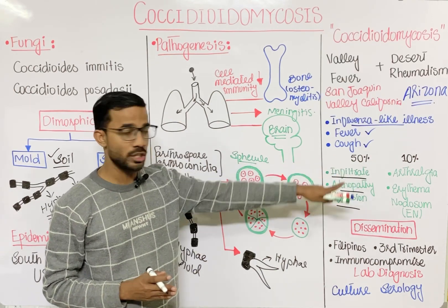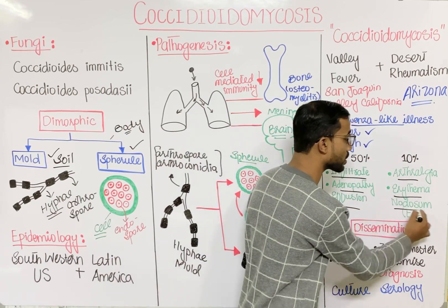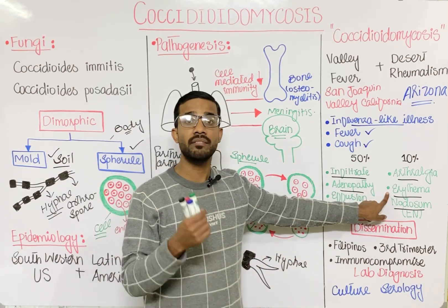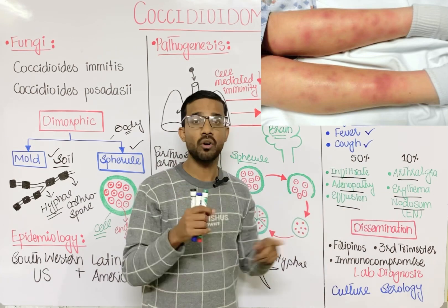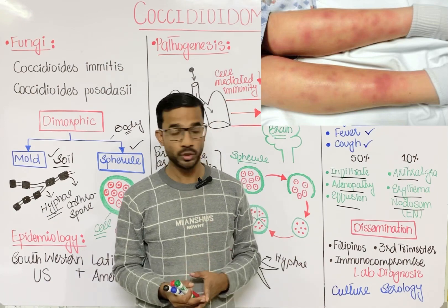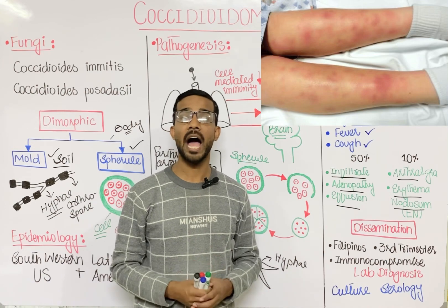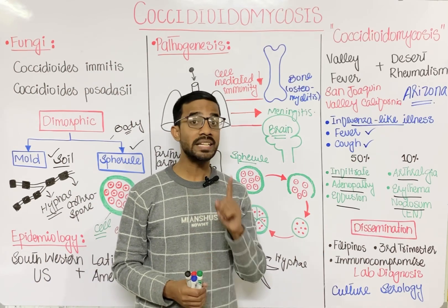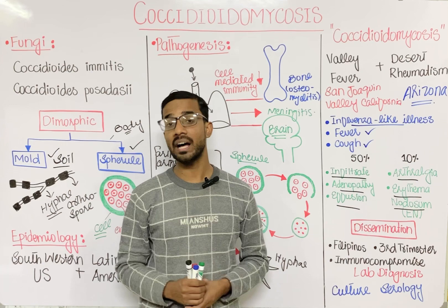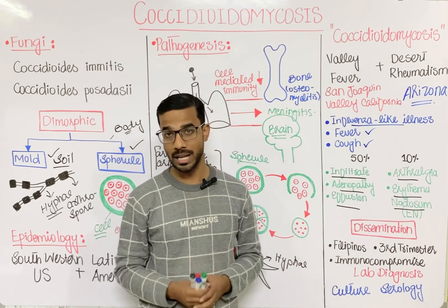In 10% of cases, you will see arthralgia, joint pain, and erythema nodosum. Erythema nodosum is red, tender nodules on the skin, specifically on the extensor sides of the tibia and ulna, and represents a delayed hypersensitivity reaction. However, erythema nodosum can also be present in other diseases like tuberculosis, leprosy, and histoplasmosis, so it is non-specific.